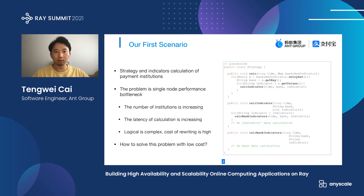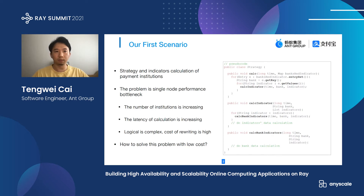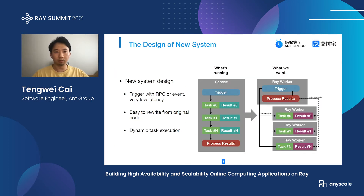On the right side, it's the code of a simplified but typical task. After we look into their code, we found that a task usually has two or three levels. Each level's calculation code splits into smaller tasks, and these tasks can be executed in parallel. This is something Ray is really good at, so we designed a new system to solve this problem. And of course, it's based on Ray.